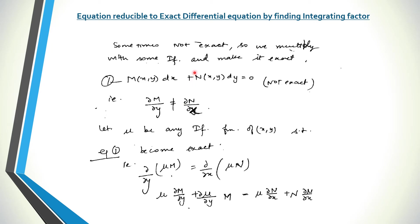We will do this by finding the integrating factor. Let mu be the integrating factor, which is a function of x and y, such that equation 1 becomes exact. It means when you multiply equation 1 by mu, it satisfies the exactness condition — that is, the partial derivative of mu·M with respect to y equals the partial derivative of mu·N with respect to x.